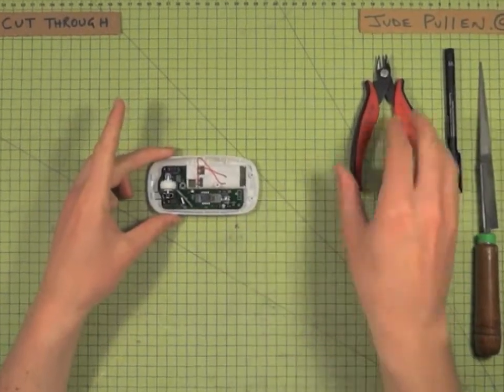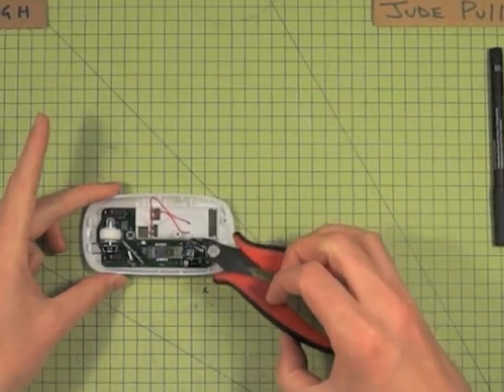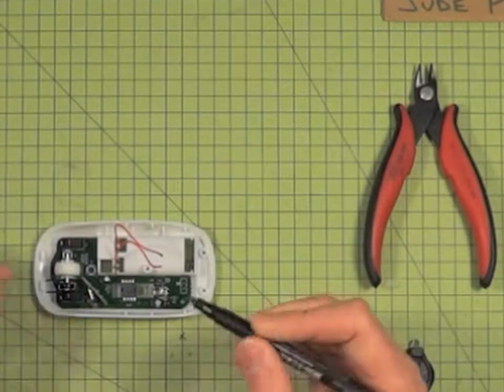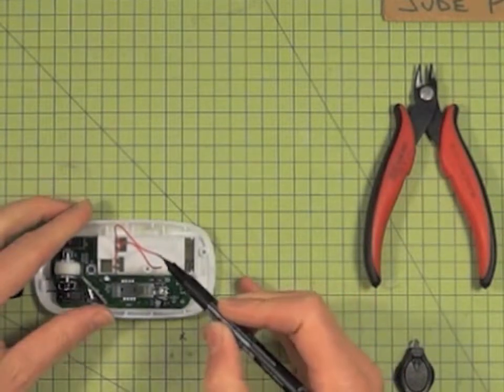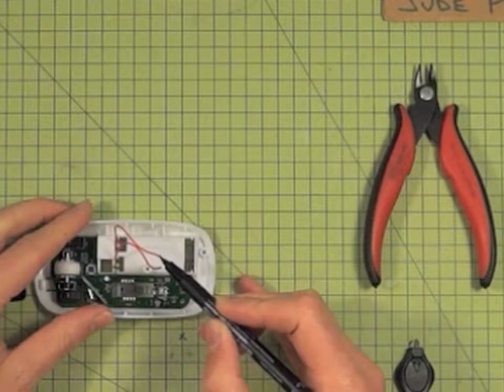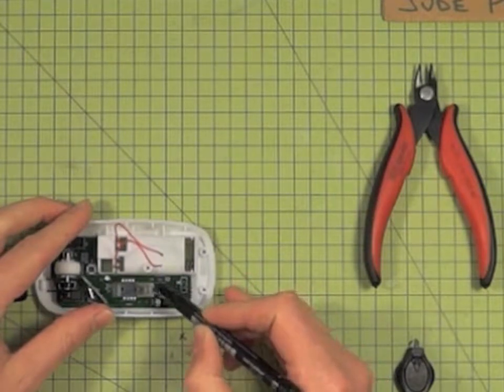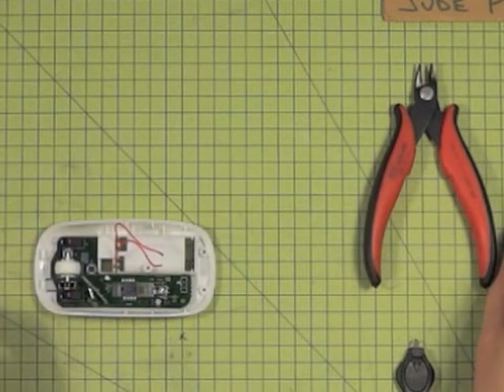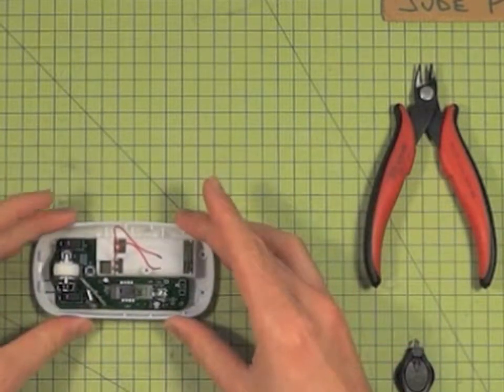First thing I did was cut through these cables which are unfortunately colored the same even though they're positive and negative. I'd highly recommend before you do things like this, or soon after, you color one of the wires and make a little mark on the PCB so you know where it came from and what polarity it is.